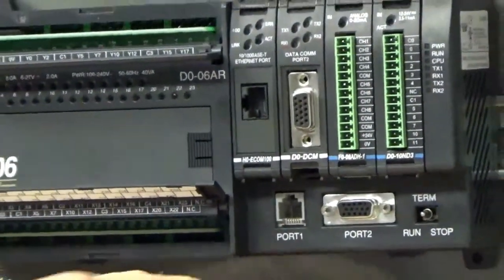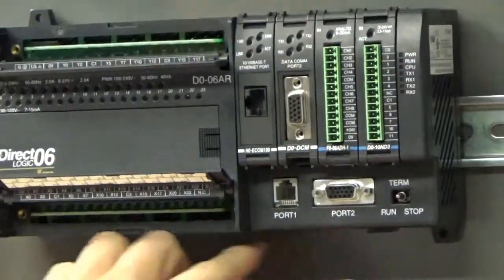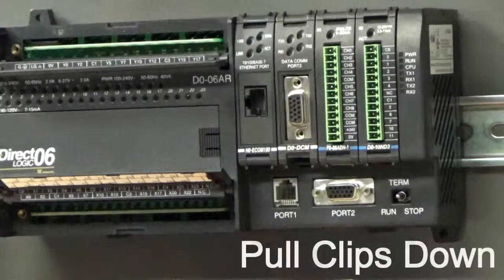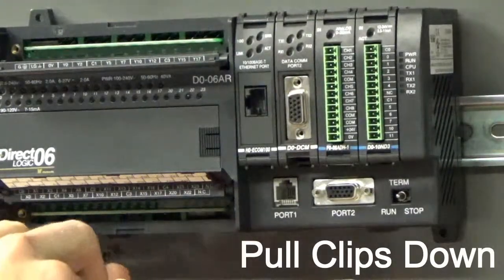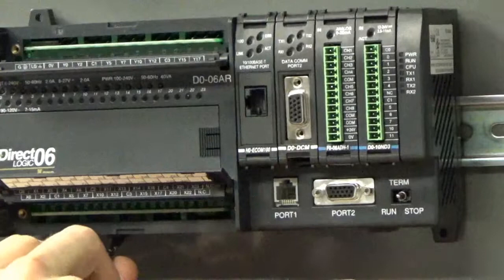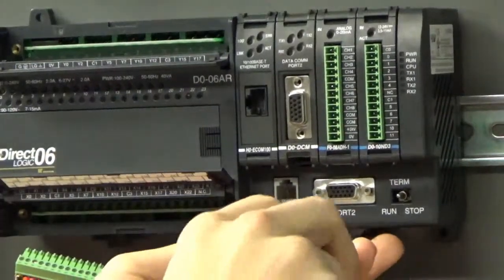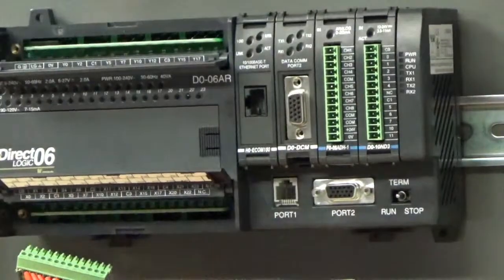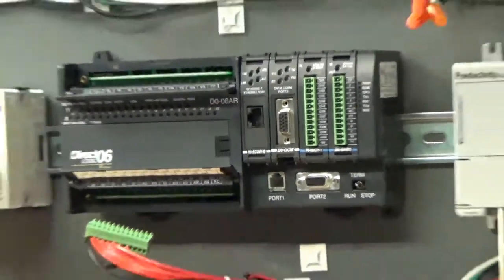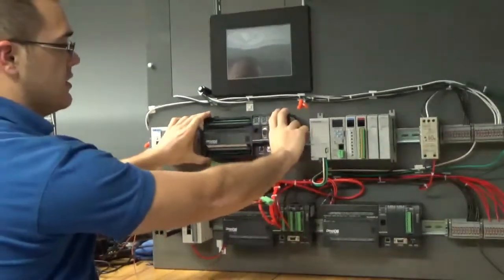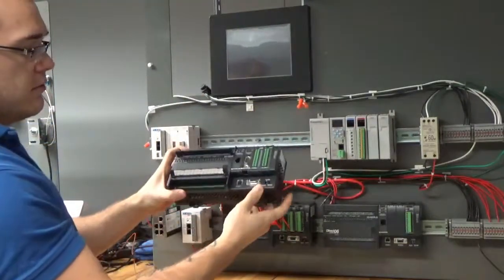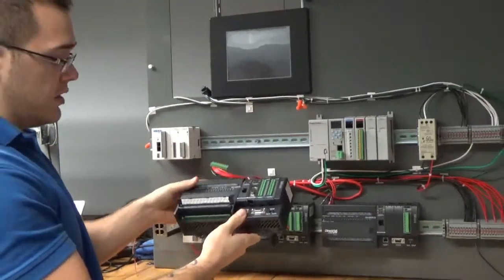With everything unplugged, we're going to go underneath. There's two clips for mounting to the DIN rail. We're just going to pull these clips down. They're not spring clips, so once you fold them down, they're down. Next we're going to tilt and push up. And there we are. The PLC is removed from the DIN rail.